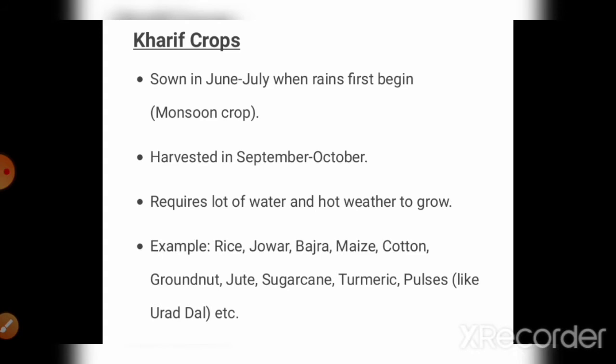Now let's move to the Kharif crop. This is the monsoon season crop — not summer season, specifically monsoon crop — because in this crop we grow plants which require lots of water and lots of heat. The monsoon comes to India in June and July, which is also the hottest season. Seeds are sown in June to July and harvested in September to October. Examples of Kharif crops are rice, jowar, bajra, maize, and cotton — all of which require lots of water for growth.